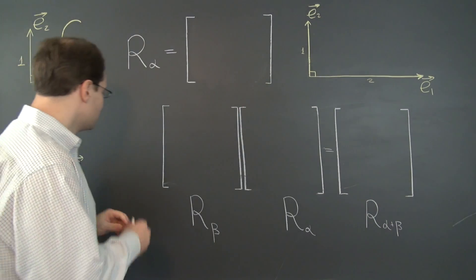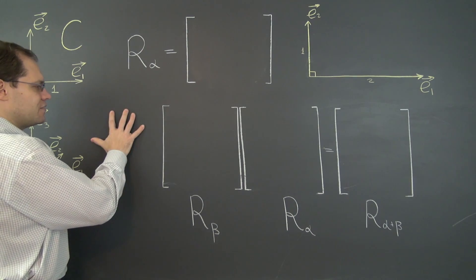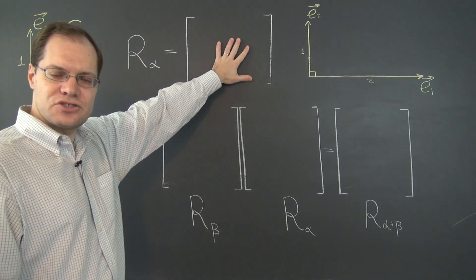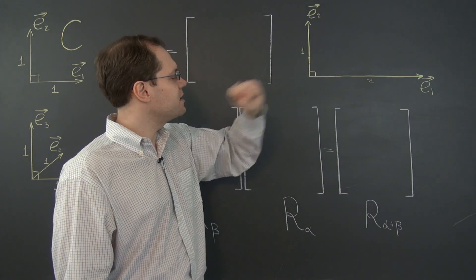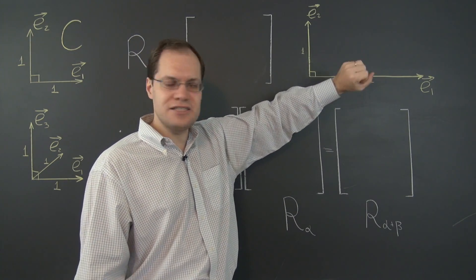We're once again dealing with rotations in the plane by the angle alpha. And our task is once again to derive the matrix that represents this transformation with respect to this basis. But this basis is not Cartesian.